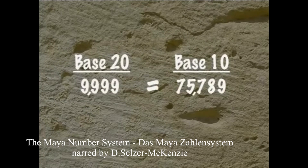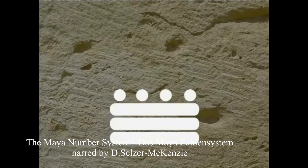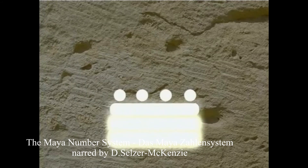Now that we've seen the differences and important similarities between the two number systems, let's start using the Maya system of numeration. This number is written in Maya notation, and since it is on the bottom, it is in the ones place. As many as 19 items can be in the ones place of a base 20 system. Counting the bars, there are 5, 10, 15 items, and then counting the dots, we get to the number 19.